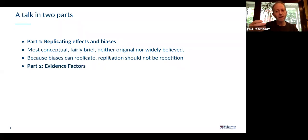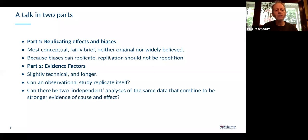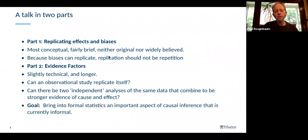The second part is about evidence factors — it's really the heart of the talk, slightly technical, not very technical, and a little longer. Once we realize that replication is not about repetition, a natural question is whether an observational study can replicate itself. Can there be two independent analyses of the very same data that combine to be stronger evidence of cause and effect than either is on its own? The goal is to bring into formal statistics an important aspect of causal inference that is currently informal.